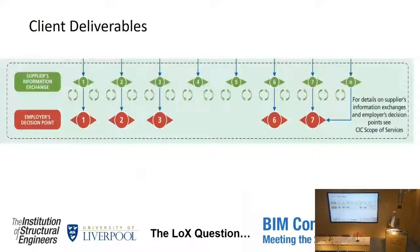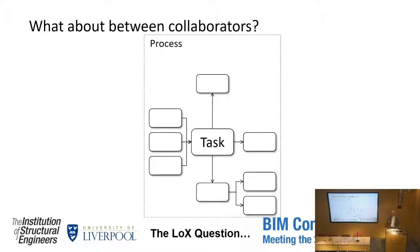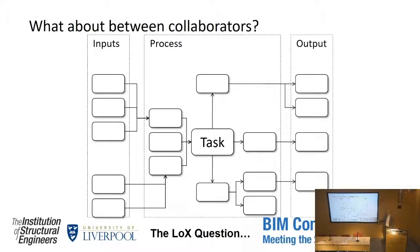The results from the LOD survey showed that the information requirements between collaborators are really important. It's not just the information I need to do my task — what I take as inputs to my task are the outputs from somebody else's task, and what I deliver as outputs are the inputs to somebody else's task. Although the EIR starts the dialogue between the employer and the design team, there's actually a much more complicated question, which is the information that as a design team we actually need to share between ourselves.